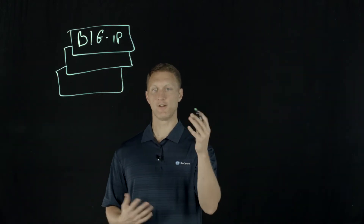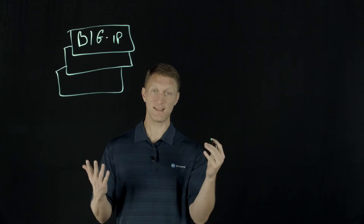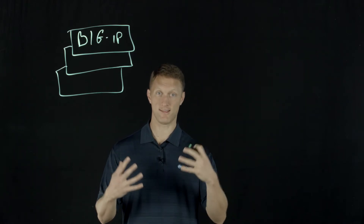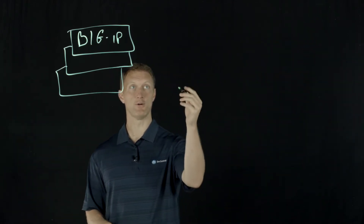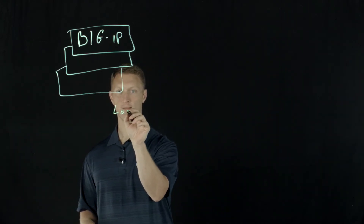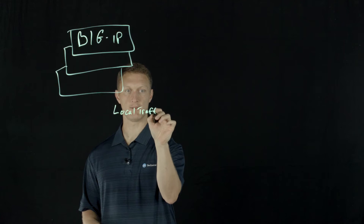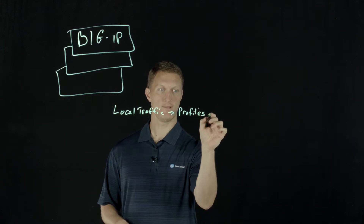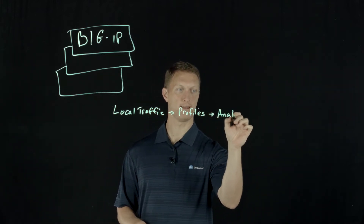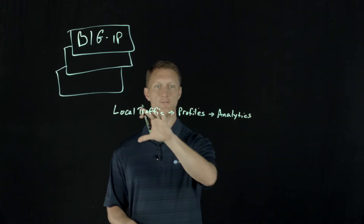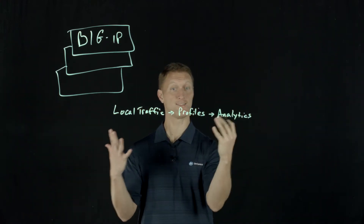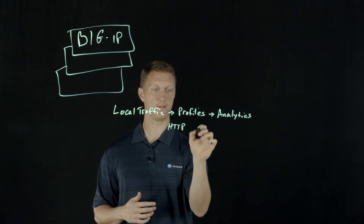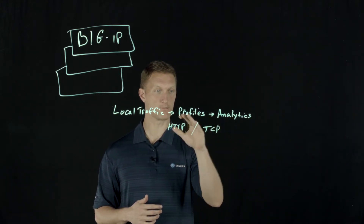Like a lot of other things on the Big IP, you set up a profile for how the statistics and metrics are going to be collected. You navigate to Local Traffic, then go to Profiles, then over to Analytics. Once you're on that page, there are a couple of different analytics profiles you can set up — you can do an HTTP analytics profile and also a TCP analytics profile.